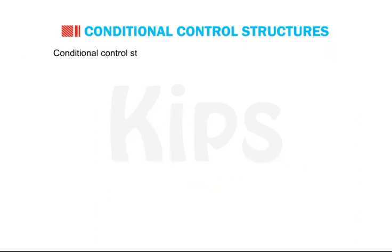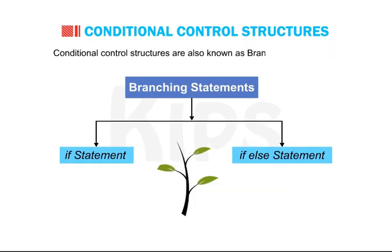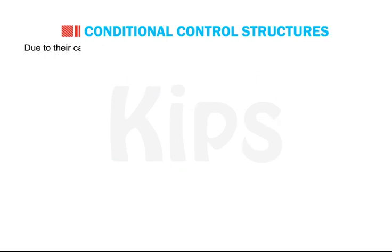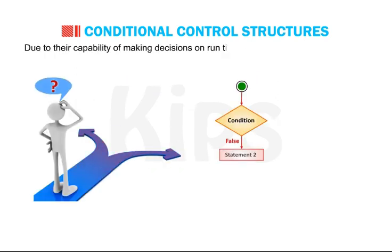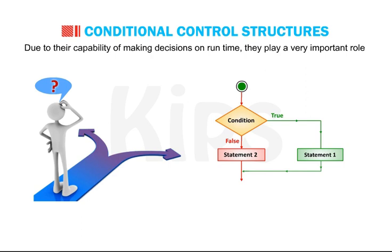Conditional Control Structures are also known as Branching Statements. Due to their capability of making decisions on runtime, they play a very important role in programming.